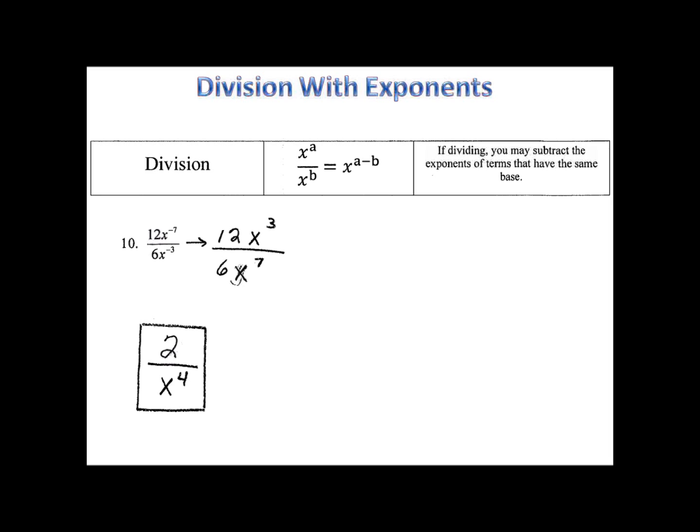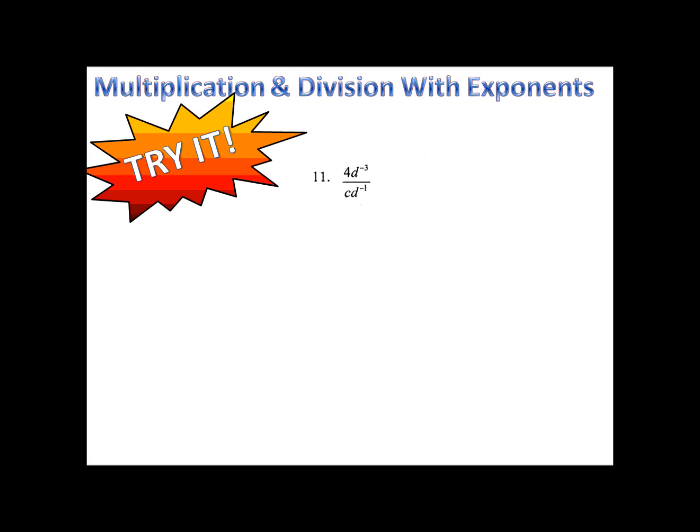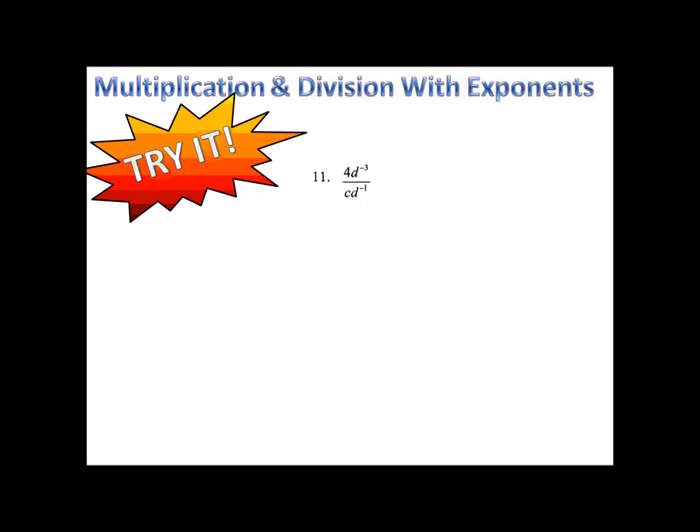Here's one for you to try. Number 11. Please pause the video here and let's see how you do. In number 11, we began by moving things around. We moved our d to the third to the bottom and our d to the first up top. Now we'll subtract. 1 minus 3 is negative 2. So we have 4d to the negative 2, which means the d is going to go in the denominator with the c.